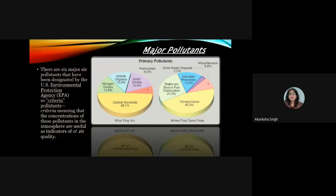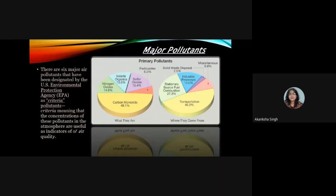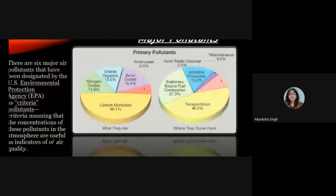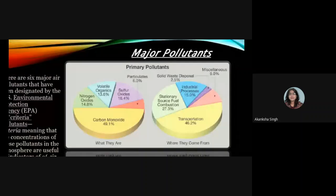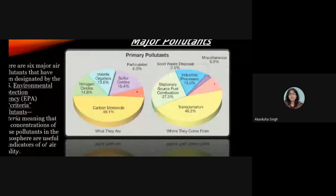There are six major air pollutants designated by the U.S. Environmental Protection Agency as criteria pollutants — meaning that the concentrations of these pollutants in the atmosphere are useful as indicators of air quality. As shown in the diagram, these include carbon monoxide, sulfur oxides, particulates, and volatile organics.